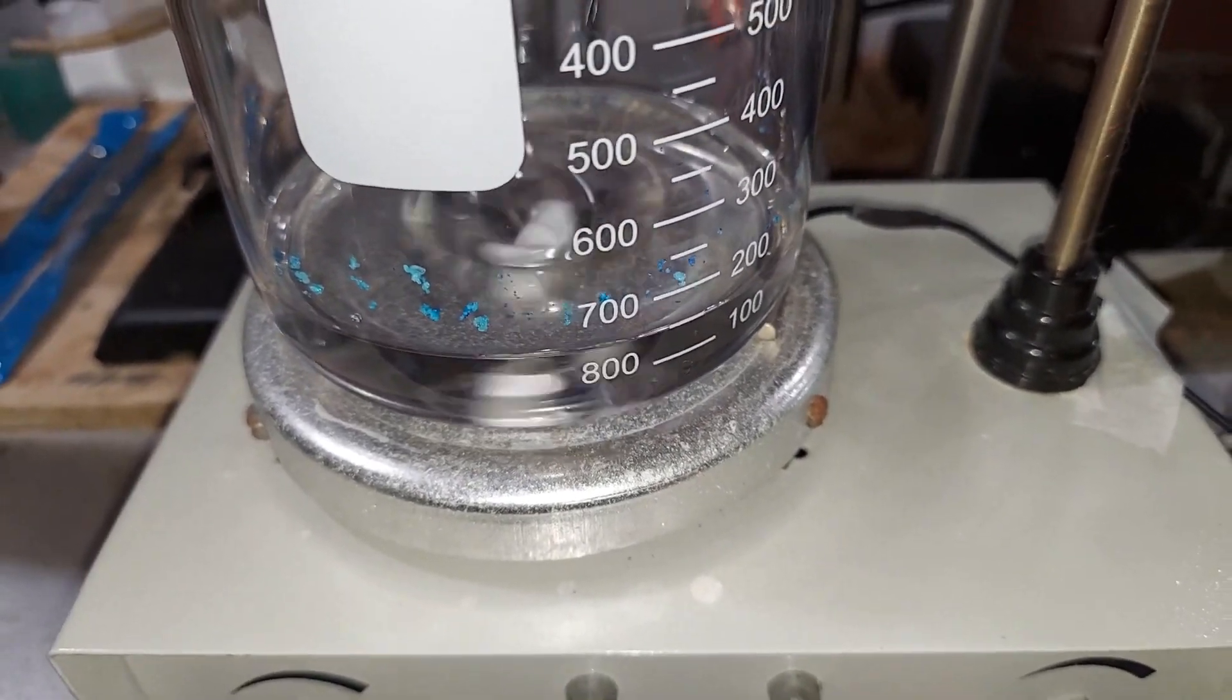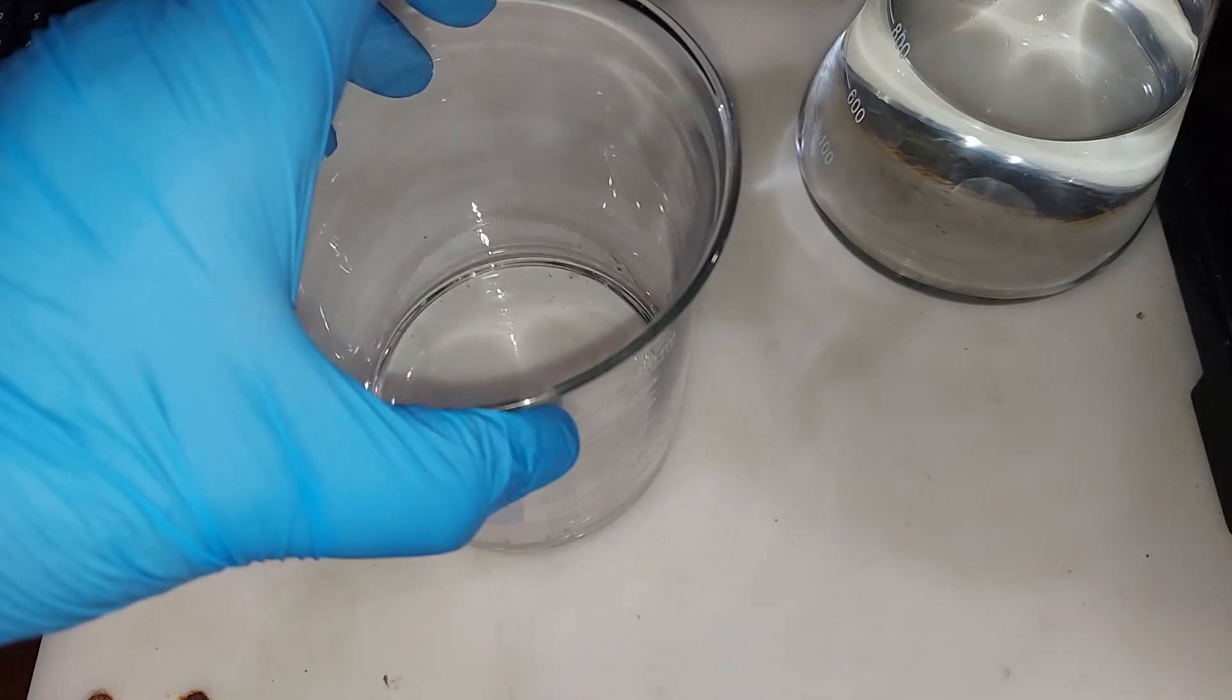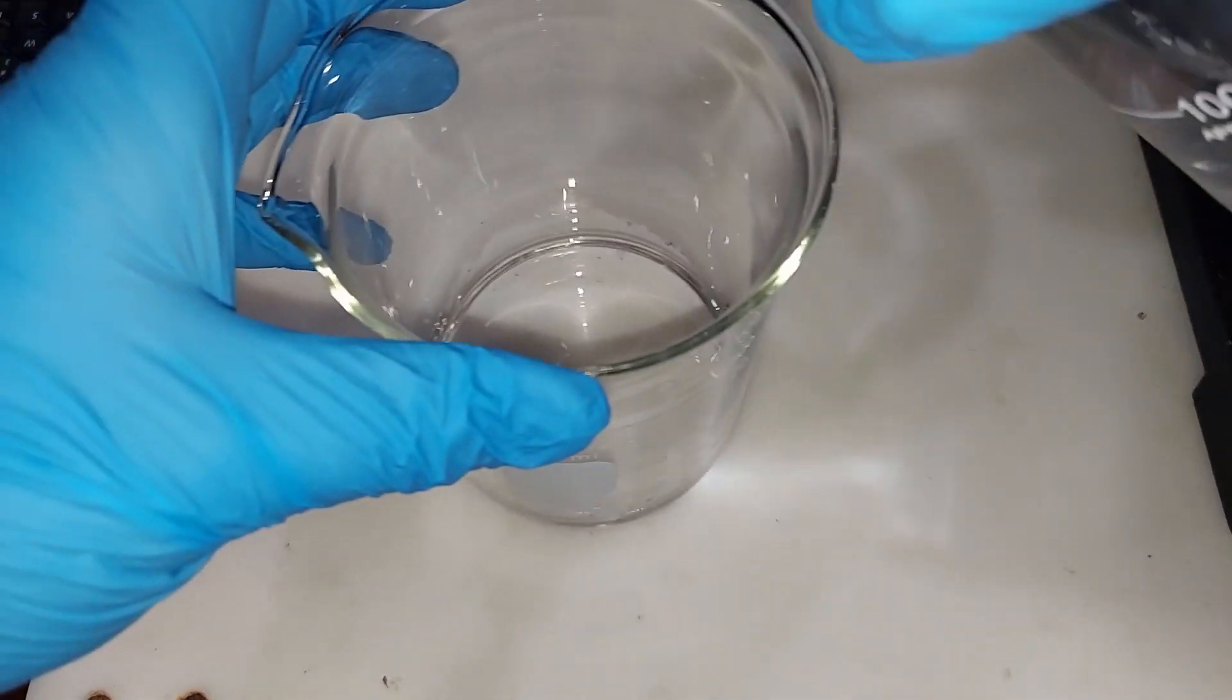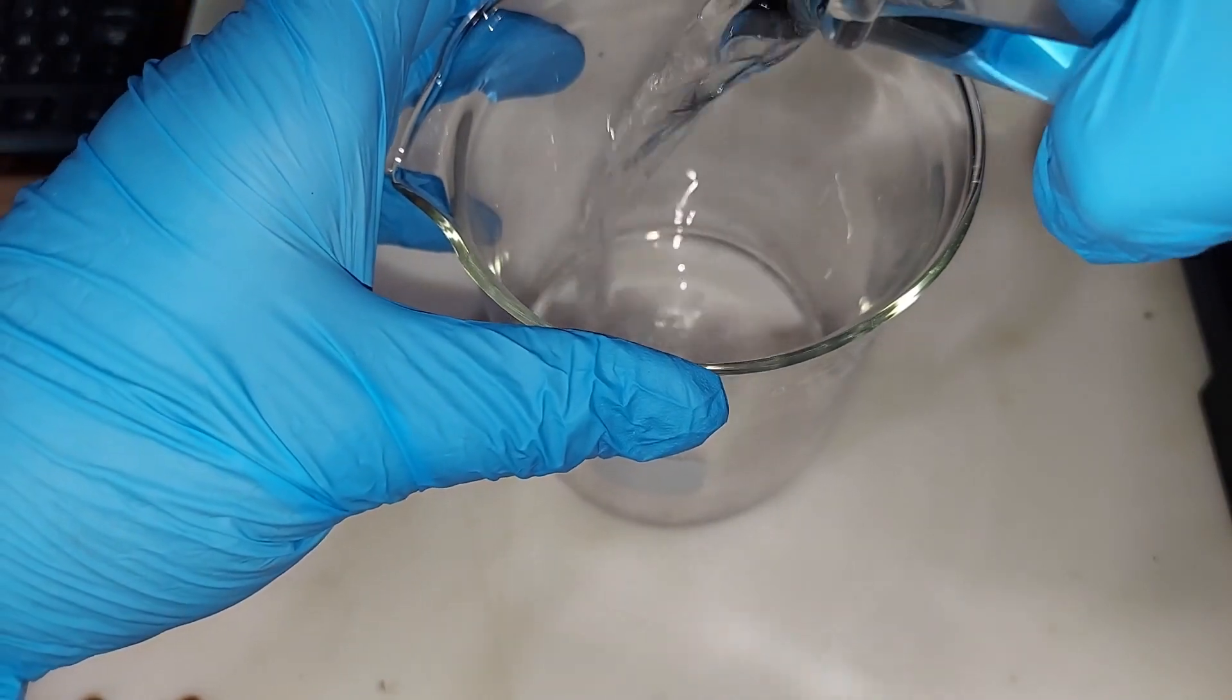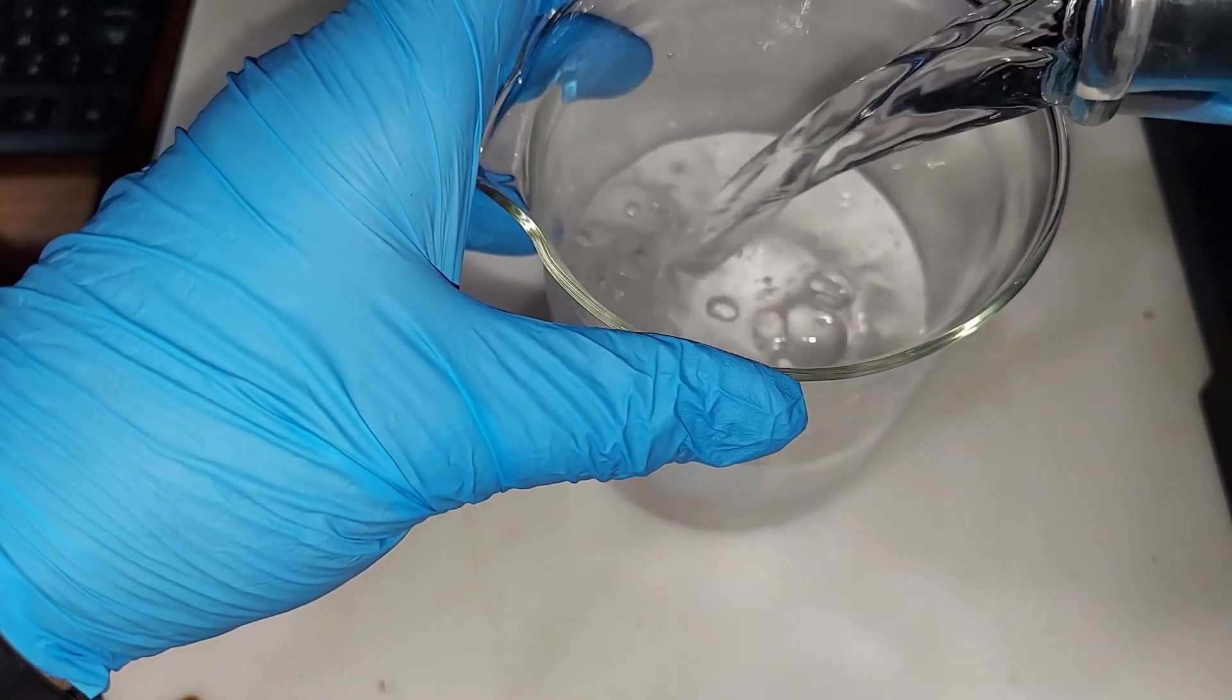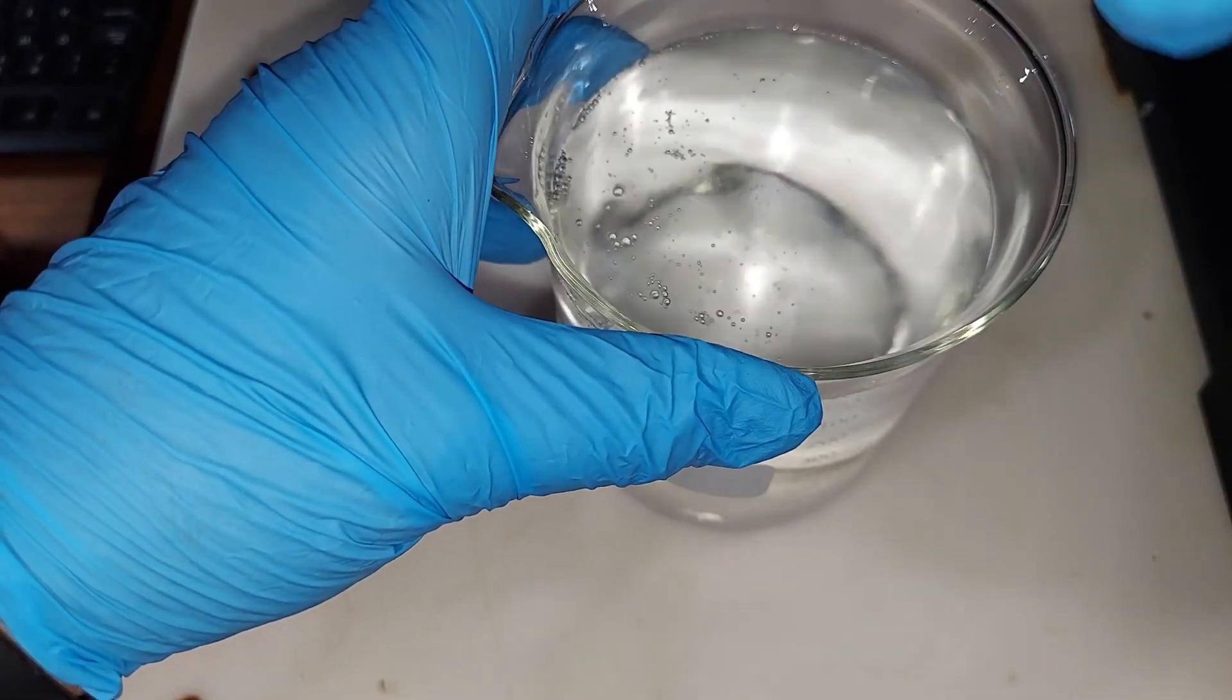Here's our sodium silicate solution we just made and the 800 milliliters of water that needs to be added to it. Very simple step, nothing special about this really. It might cloud up like you just saw right there but let it set and it will clear up again nicely. You can see the solution is very clear at this point.